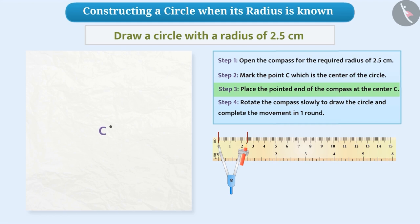Step 3. Now, we will place the pointed end of the compass at the center C. We will find that the tip of the pencil has also reached a point on the paper. The distance taken should not change.